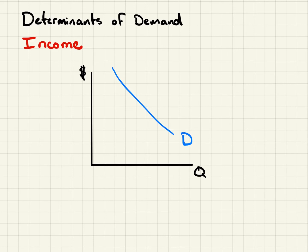But there are goods and services where, as your income increases, you actually buy less. The classic example for this is a cup of noodles, or ramen noodles. The more money you have, typically the less ramen noodles you buy. So ramen noodles are considered an inferior good.